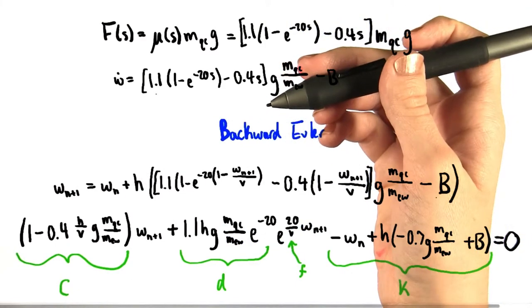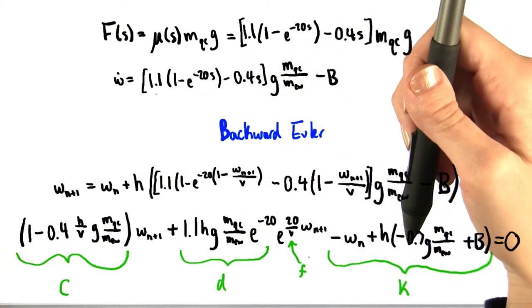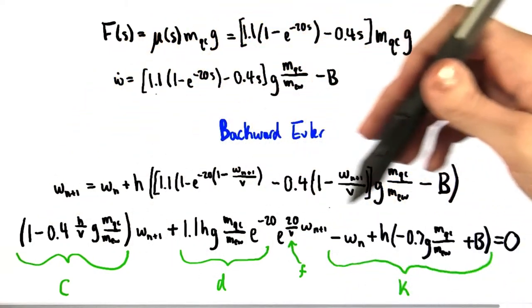This makes our job very simple. Remember, we wanted to identify what c, d, f, and k are, and now we can just read them directly off of this equation.